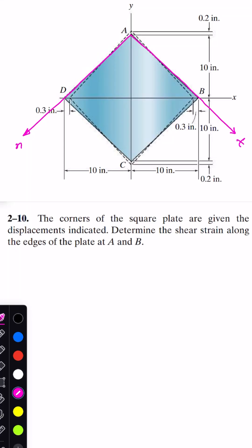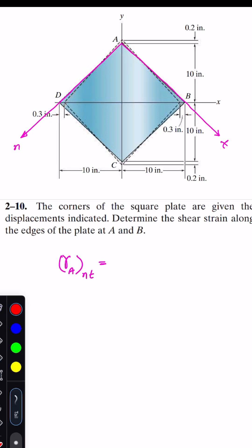We want to find the shear strain at A along the normal n tangential axis. If we somehow find this angle after the change, let's say this angle is theta dash, then we will be able to find the shear strain at point A along the n and tangential axis.